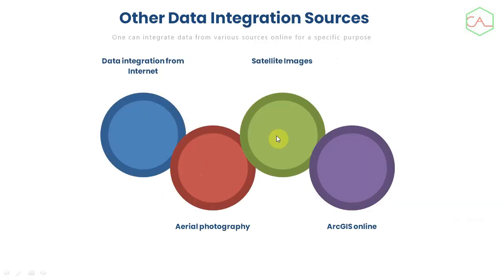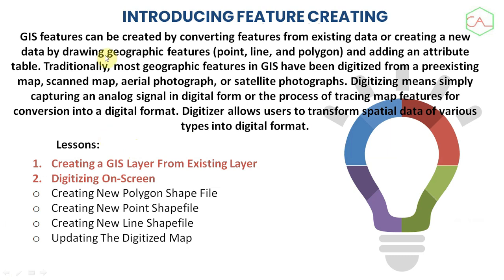There are different sources from which you can acquire your data. We will also look at how to create GIS features — how to convert features from existing data or create new features from existing data. This includes creating point features, line features, and polygon features, and also adding these features to an attribute table. We will look at how to create a GIS layer from an existing layer, digitize on screen, and create new polygon shapefiles, point shapefiles, and line shapefiles.